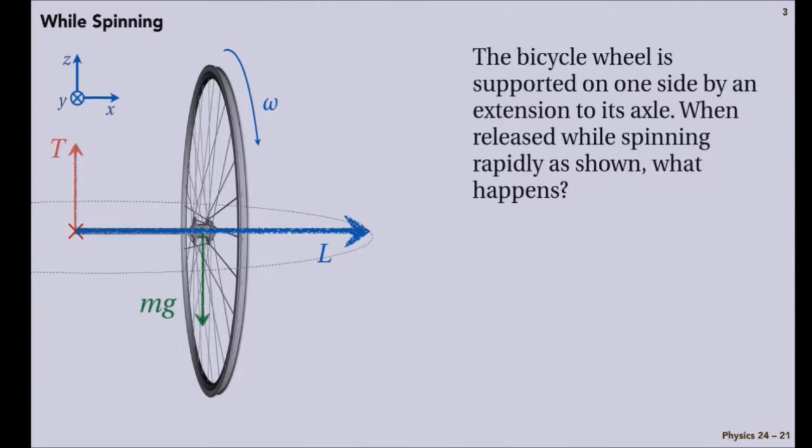So the angular momentum of the wheel when it's spinning is aligned with the angular velocity. And this is at a point before I let go. But when I let go, if I use this as my fixed reference point, the gravitational torque is into the board. So there ought to be a change in this big vector that points into the screen.